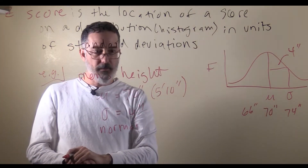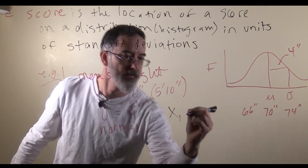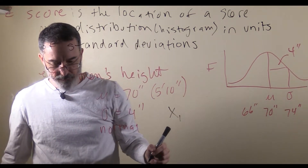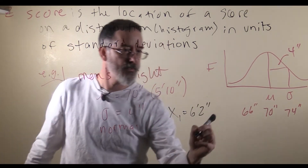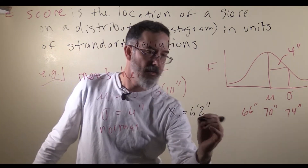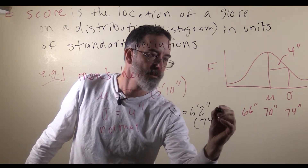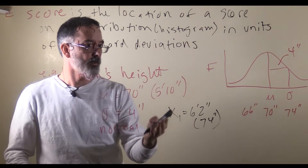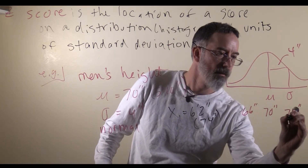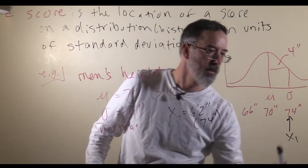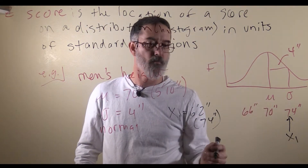Now let's consider a guy — one data point. We will call him x1. If his height is 6 foot 2 inches, that would be the same as 74 inches. This individual's height would be right there. He would be one standard deviation above the mean, so he would have a z-score of 1.